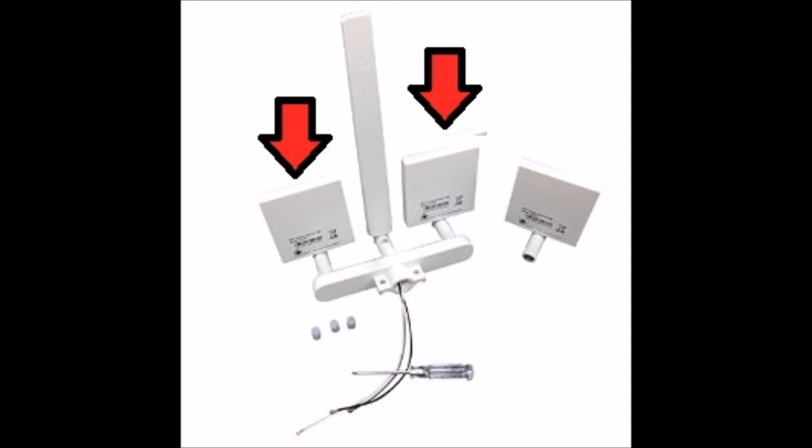So the ones on either side of the controller are actually for your video, and those are in 2.4 GHz. And the center antenna controls the aircraft - the up, down, left, right controls - and is actually in 5.8 GHz, which is interesting.